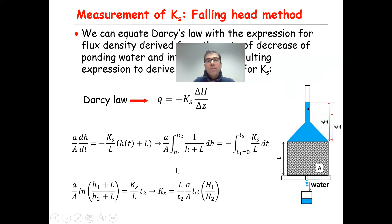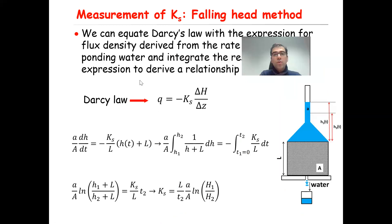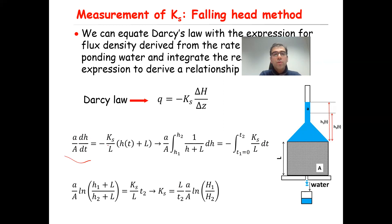On the other hand, we know that the Darcy velocity equals minus Ks times ΔH/ΔZ. So all I need to do is equate these two expressions: (small a / capital A) times dH/dt equals minus Ks times ΔH/ΔZ.